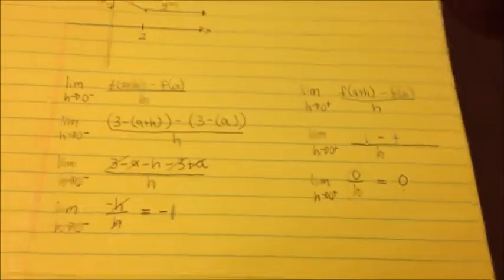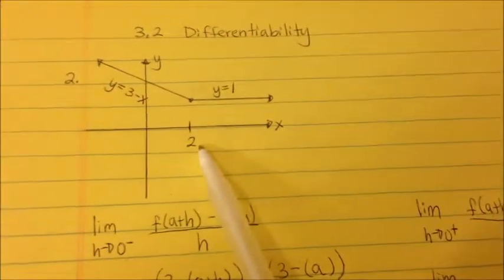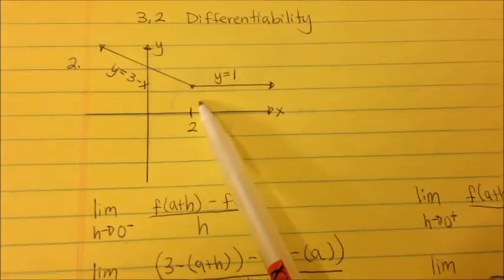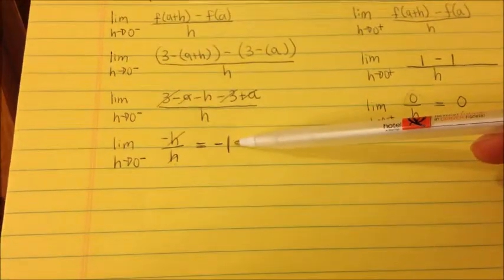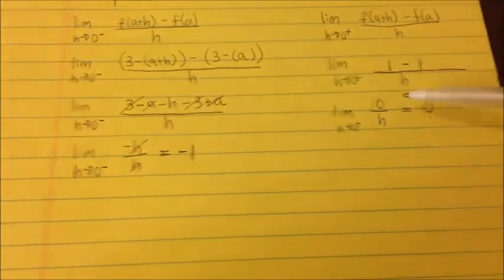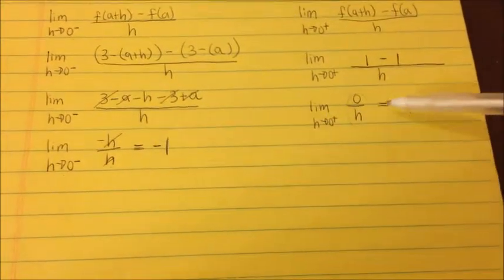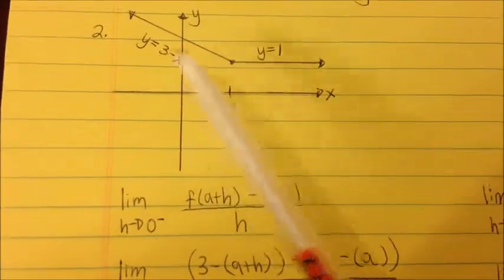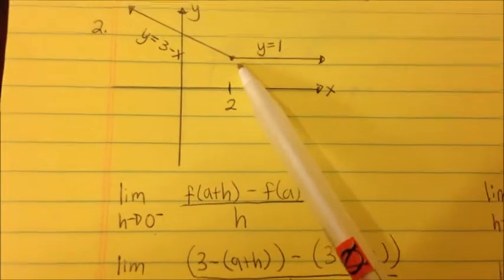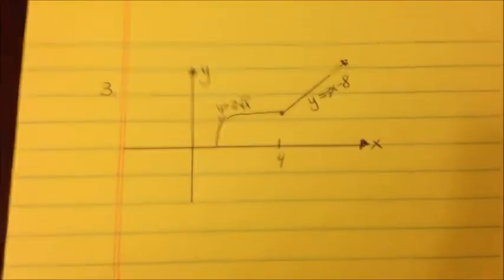As we discussed in chapter 2, the question is whether the limit exists. We're asking: is the function differentiable at x equals 2? The left-hand side slope was negative 1, and the right-hand side slope is 0. Since they are not equal, the function is not differentiable at x equals 2. It is differentiable everywhere else — just not at that corner where the two pieces meet. Now let's try example 3, which involves a square root.